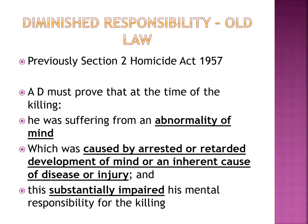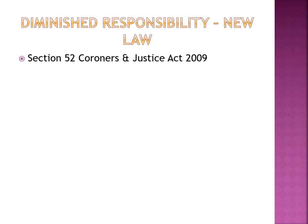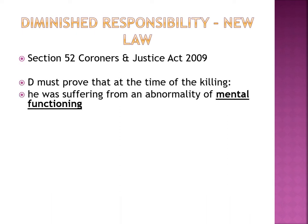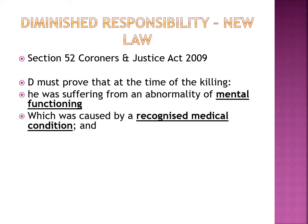The updated law is defined under section 52 of the Coroners and Justice Act 2009 — always include the year when citing legislation. The defendant must show at the time of the killing that they were suffering from an abnormality of mental functioning. Note that under the Interpretation Act 1978, 'he' also includes 'she' or 'they.' This is much more precise terminology than 'mind.' The second part requires that this was caused by a recognised medical condition — much better than the lengthy paragraph in the old law, and it indicates that medical expert evidence will be needed.